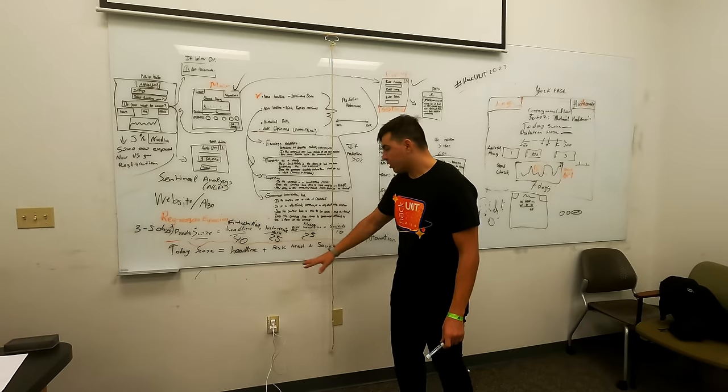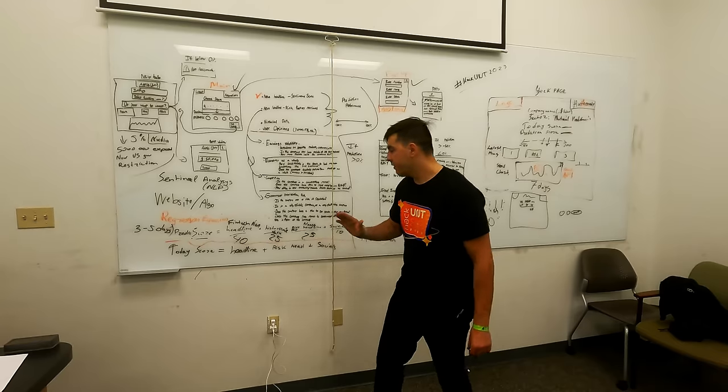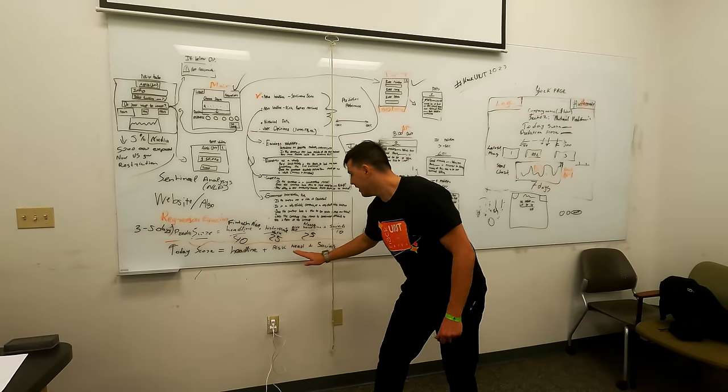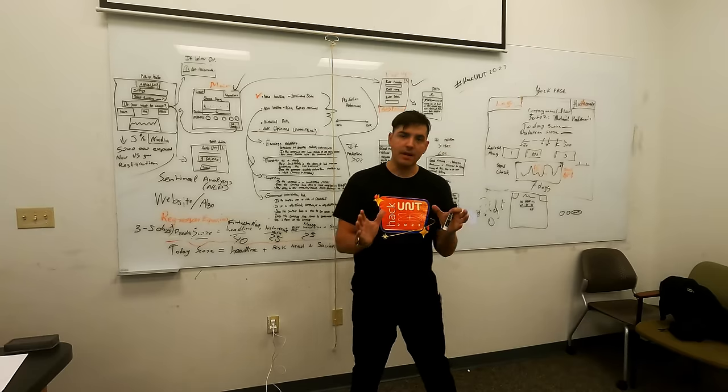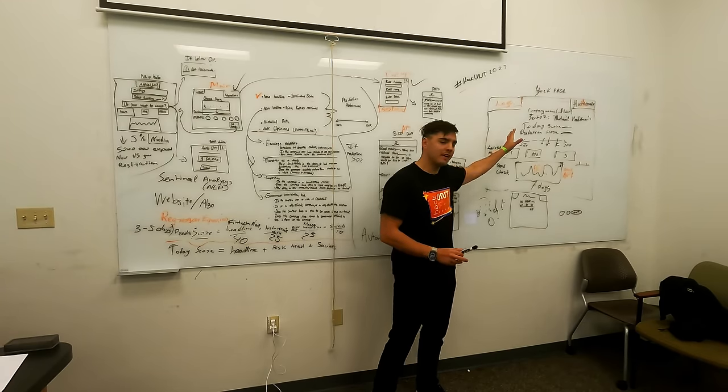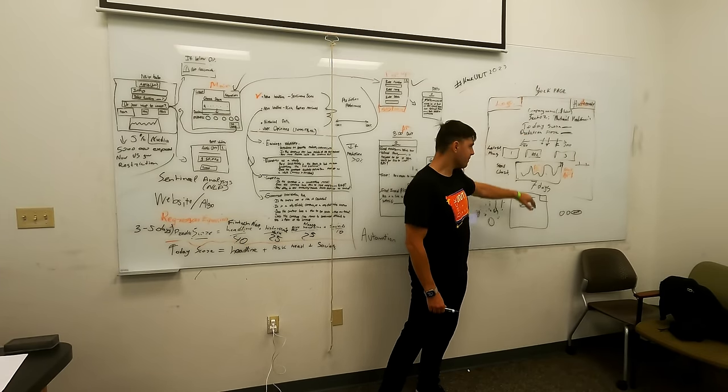For today's score, we're removing the history and just keeping headline, risk headline management, and socials. We don't have history. That's why we have two scores. We're coming back here, so we have two scores: today's score and the prediction score.